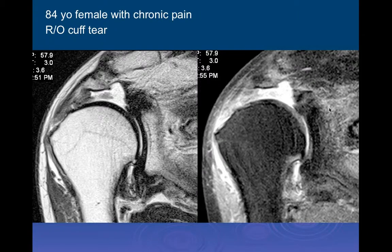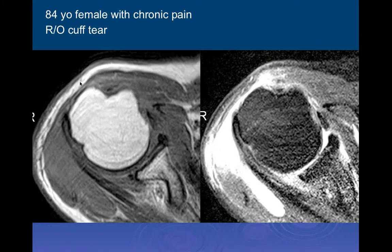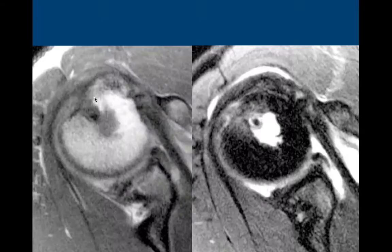Whenever I've done shoulder surgery, one thing I've always tried to avoid is freeing the deltoid from the acromial process or the clavicle—try your best not to touch that attachment and certainly not go any further than two inches distally. Here's an 84-year-old female with chronic pain where we can see a dehiscence of the deltoid with distal retraction and focal absence of the deltoid, along with other cuff and deltoid tears.